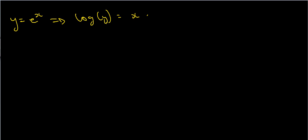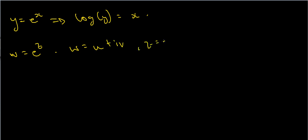Now suppose I ask you to solve the equation w equals e to the z, where w and z are complex numbers. In other words, w is u plus iv and z is x plus iy — these are complex numbers.